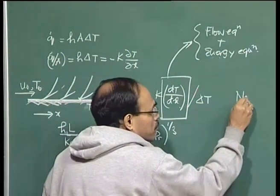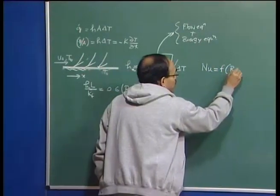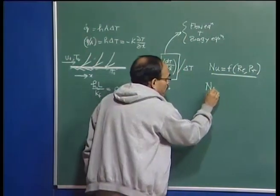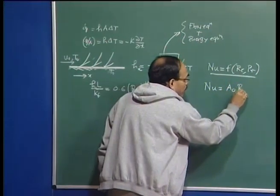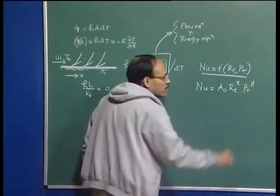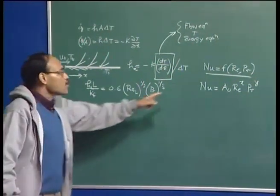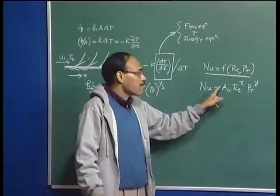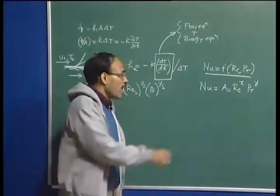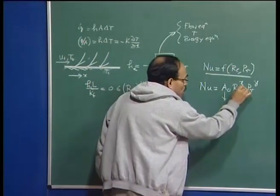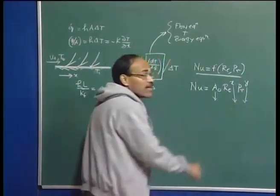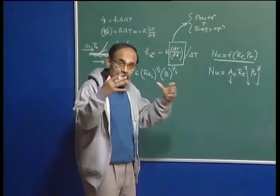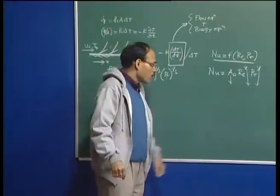We can anticipate that the correlation is going to take the form of Reynolds number to the power x times Prandtl number to the power y, because for most forced convection cases, theory expects this form. For spherical geometry, we add two to this. The task then is to determine the pre-exponential factor and the exponents x and y, and we have no option but to carry out laboratory experiments.